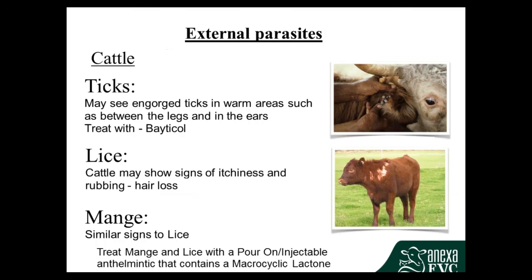Now external parasites in cattle. With ticks, if you're in a warm area — generally rural areas north of the Tararua ranges, though with warmer weather they're now appearing around the east coast and even around Nelson. Ticks like warm, shaded areas, so you'll often find them between the legs and in the ears. To treat them you can use a product called Bayticol which you pour onto the animal, or there are ear tags called Python ear tags which contain a tickicide.